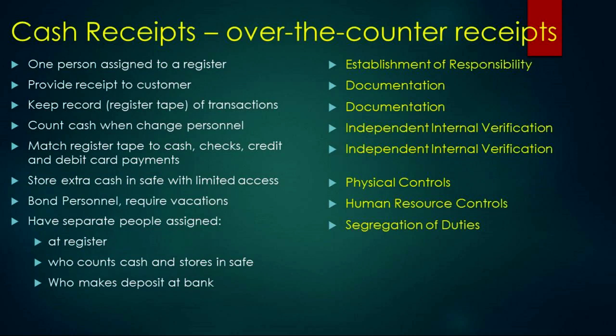Keeping a register tape of all transactions — that big roll of tape is turned in at the end of the day to track all transactions. Counting the cash when you change personnel, where one person is leaving and one is coming in and they both count the cash together and agree on the amount — that's independent internal verification. Then you match that register tape to the cash, checks, credit card, and debit card payments in the cash drawer. If the register tape says two thousand dollars in sales, there should be two thousand dollars total — maybe five hundred in cash, a thousand in checks, and five hundred in credit and debit card payments.